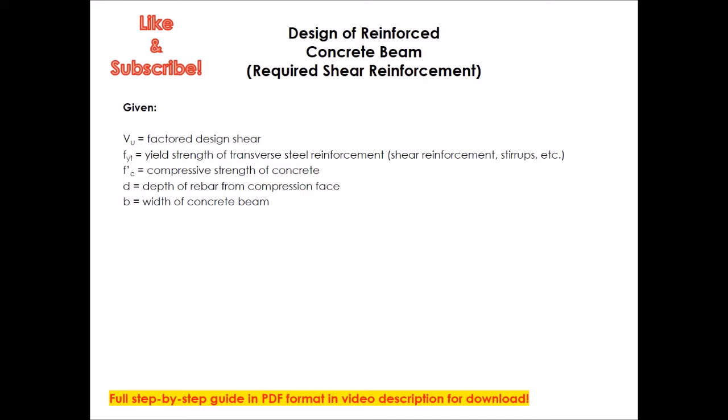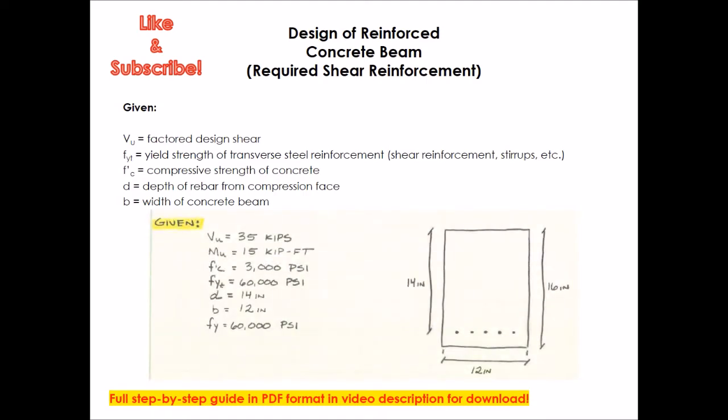We're going to have our givens. And from there, we have our factored design shear Vu of 35 kips, factored design moment Mu of 15 kip-feet. And this is the moment at the max shear that we're designing for. So this is the moment where the 35 kips is occurring. Then we have the strength of the concrete f'c of 3000 psi. Strength of the reinforcement is 60,000 psi. fyt is just the shear reinforcement. fy is the tension reinforcement.